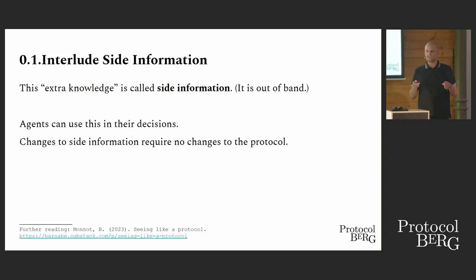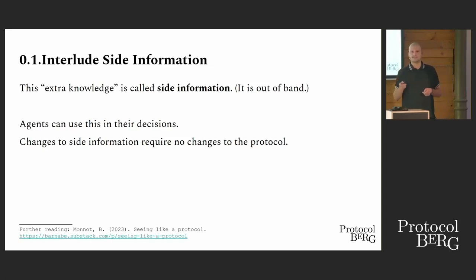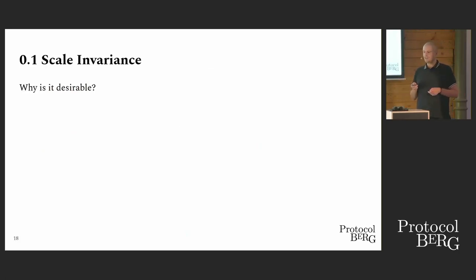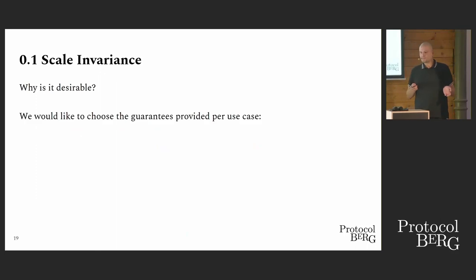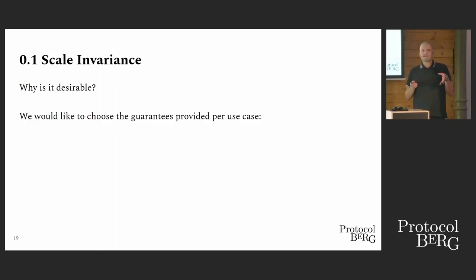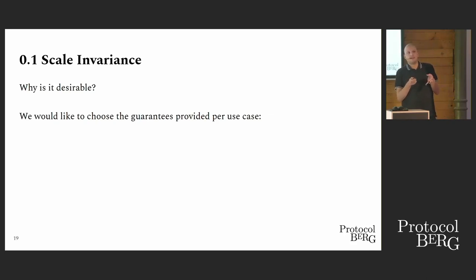If you want to read more about this, Barnaby wrote a great article. I will also upload the slides if you want to click on any links later. Now we know what scale-invariance is — now we want to know why we want this. Basically, if we have a scale-invariant system, we would like to choose guarantees for every application. For example, if I want to buy a sandwich, I don't need expensive global consensus.